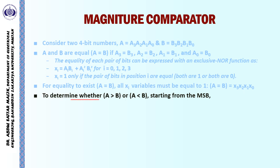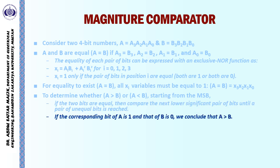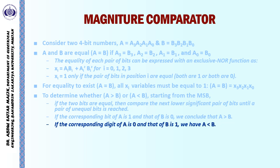To determine whether A > B or A < B, we start from the most significant bit. If the MSB of A is 1 and that of B is 0, then A is greater than B. If the MSB of B is 1 and A is 0, then B is greater than A. If the MSBs are the same, we check the next lower significant pair of bits until an unequal pair is found. If the corresponding bit of A is 1 and B is 0, A is greater; if A is 0 and B is 1, then A is less than B.